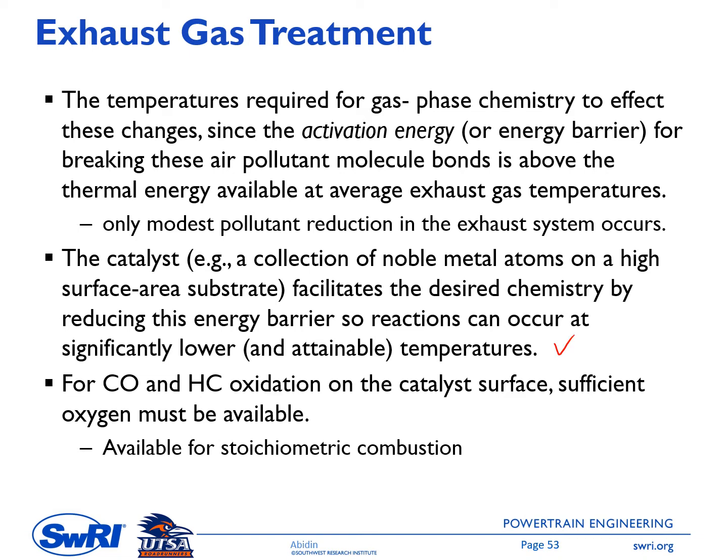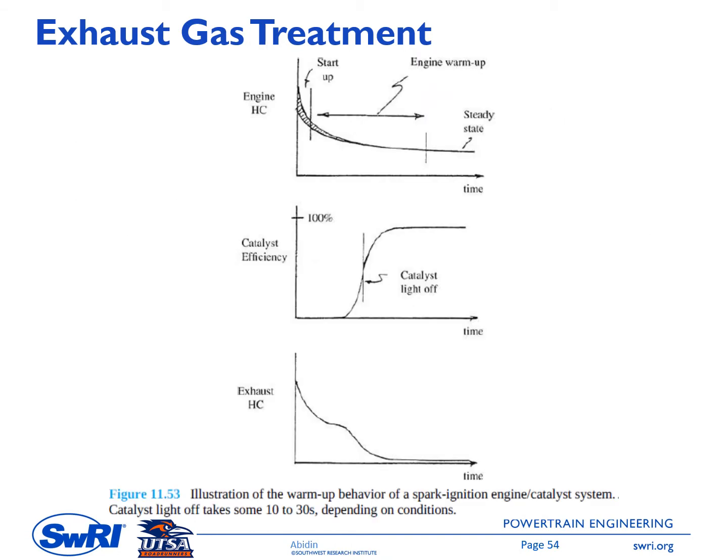For CO and HC oxidation on the catalyst surface, sufficient oxygen is also needed. This will be available through a stoichiometric combustion system. For effective operation of the catalysts, the exhaust catalyst must operate at an elevated temperature with an exhaust gas flow rate and composition matched to the catalyst size and chemical conversion task. Thus, the insertion of the catalyst into the engine exhaust requires that the catalyst and engine be designed as two interacting systems.